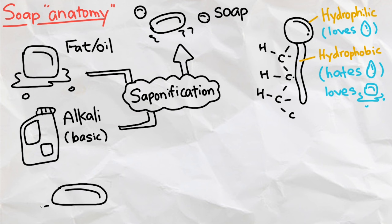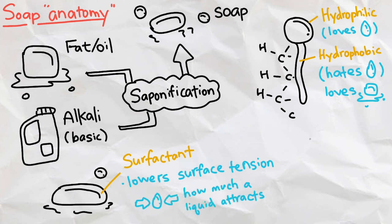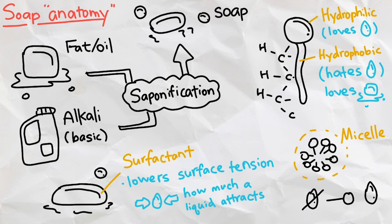This shape makes soap molecules a surfactant, meaning that it is a compound that lowers the surface tension of a liquid, which is how much a liquid wants to attract to each other. At high concentrations in a water solution, the soap molecules form this configuration called a micelle, where the heads are sticking out and the tails are sticking in, away from the water.